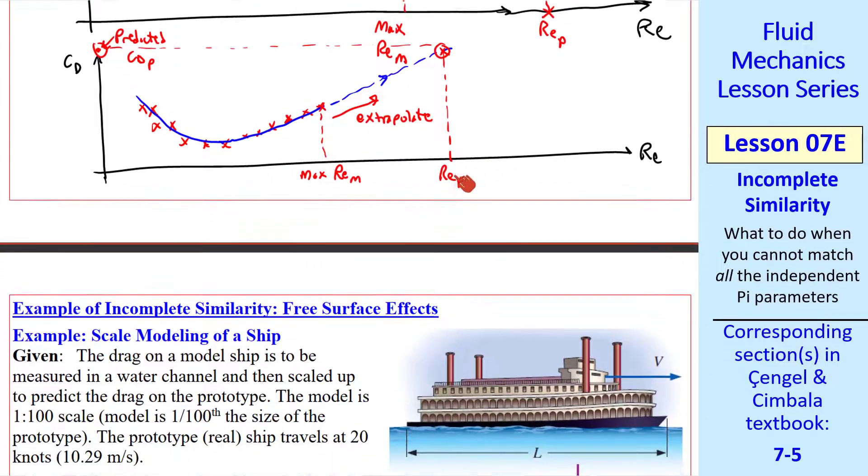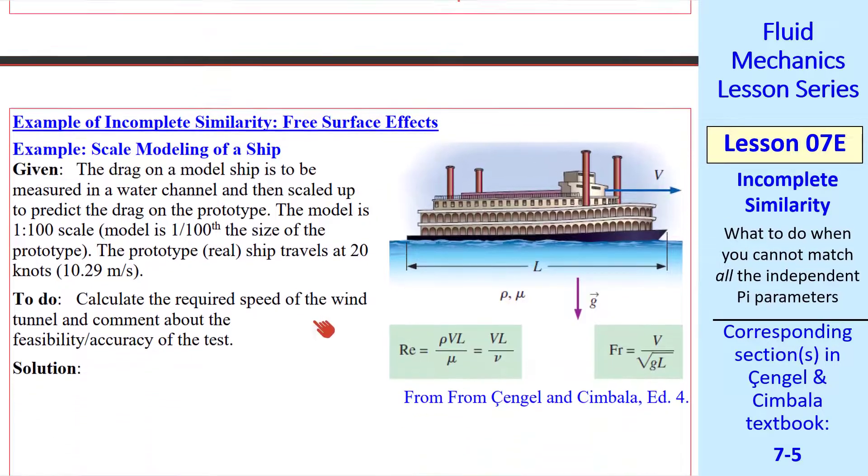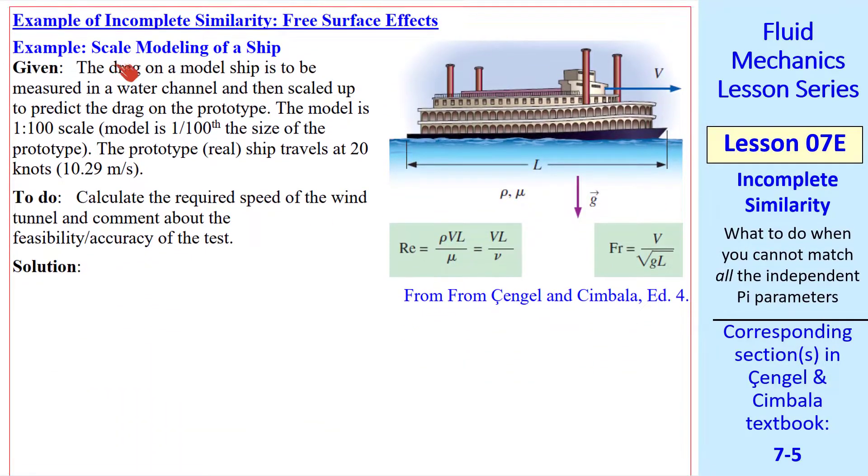As a second example of incomplete similarity, let's consider free surface effects. For example, when you're modeling a ship with a scale model. The drag on a model ship is to be measured in a water channel. By the way, a water tunnel is typically enclosed, whereas a water channel has a free surface. In this problem, we want to scale up and predict the drag on the prototype. Here the model is 1/100 scale, which means the model is 1/100th the size of the prototype. And the prototype ship travels at 20 knots, which is 10.29 meters per second.